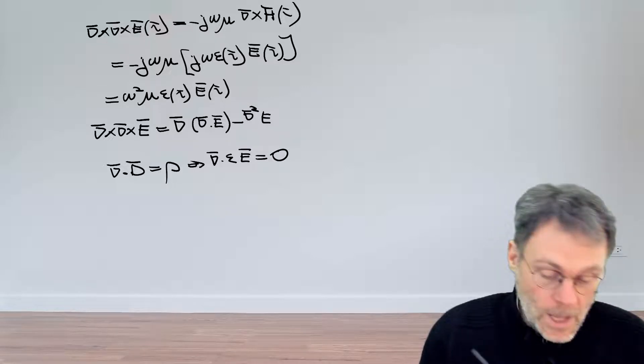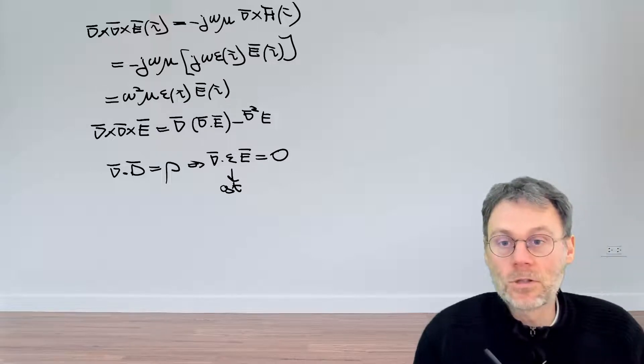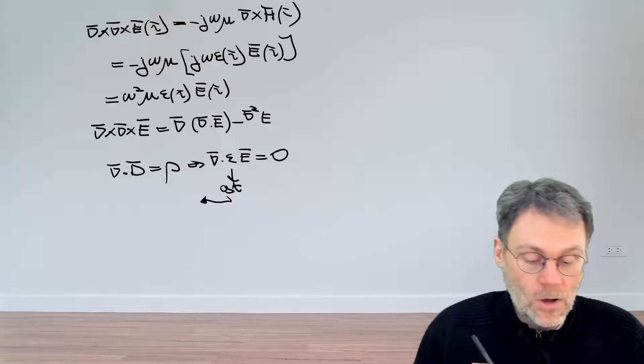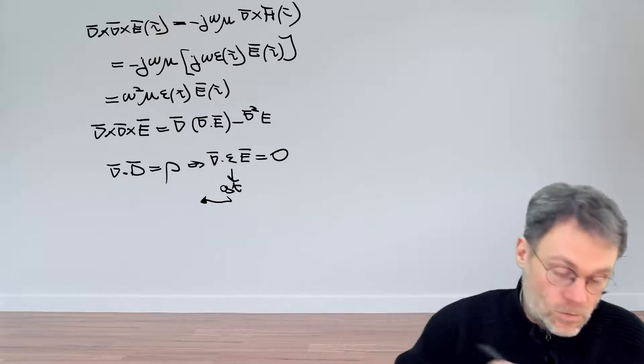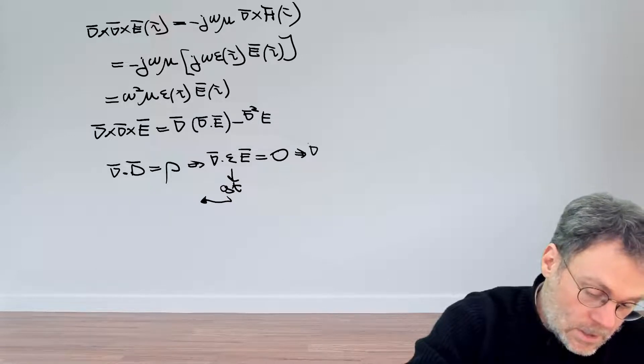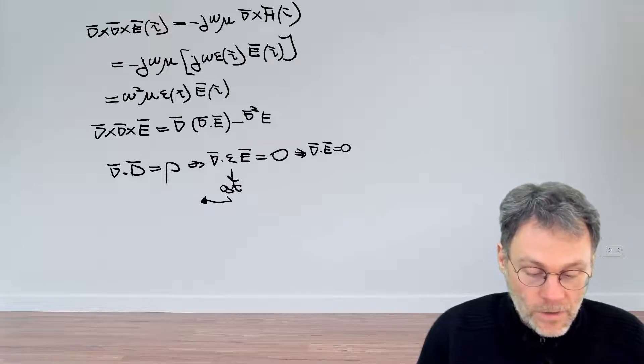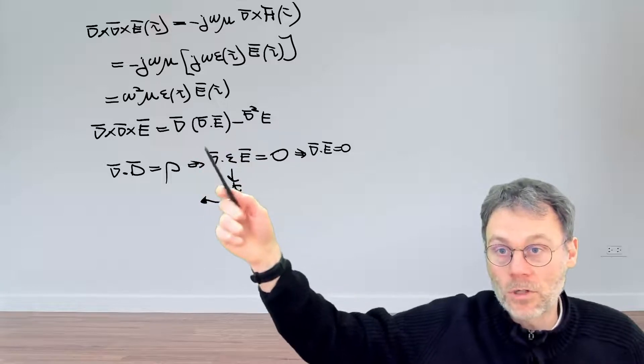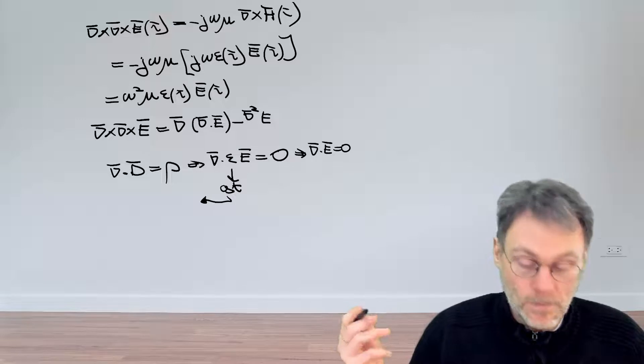And if rho is equal to zero, then the right hand side is zero. And if we say that epsilon is a constant, if it does not vary as a function of r, then we can just bring it outside of the divergence, which is just a differential operator. And under these conditions, we can conclude that the divergence of the electric field is zero. And if the divergence of the electric field is zero, that means that in this equation over here, we can just drop that term here, and we're only left with minus the Laplacian.